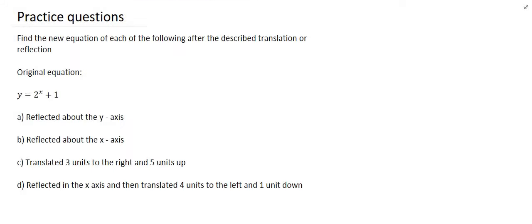And the last part will be the reflections and translations of exponential graphs. So here we have a graph, an exponential graph that is y equals 2 to the power of x plus 1. It gets reflected in the y-axis. Remember a reflection in the y-axis means that it's gonna jump over the y-axis. And so is it the x values or the y values that change? It's the x values.